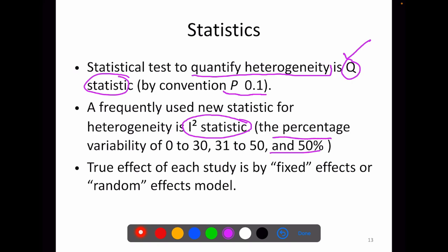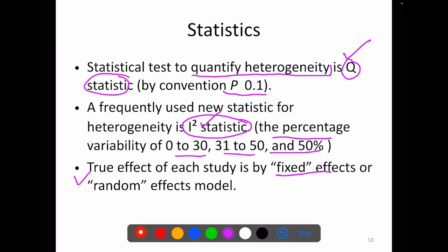The percentage variability between studies beyond what would be expected by chance is expressed using the I-square statistic, given in percentage of variability. It is important to consider that this test is underpowered especially when the number of studies being pooled is small. I-square values of 0 to 30, 31 to 50, and more than 50 represent mild, moderate and marked differences between studies respectively. The two commonly used statistical methods for combining data are the Mantel-Haenszel method based on fixed effects theory, and the DerSimonian-Laird method based on random effects theory.